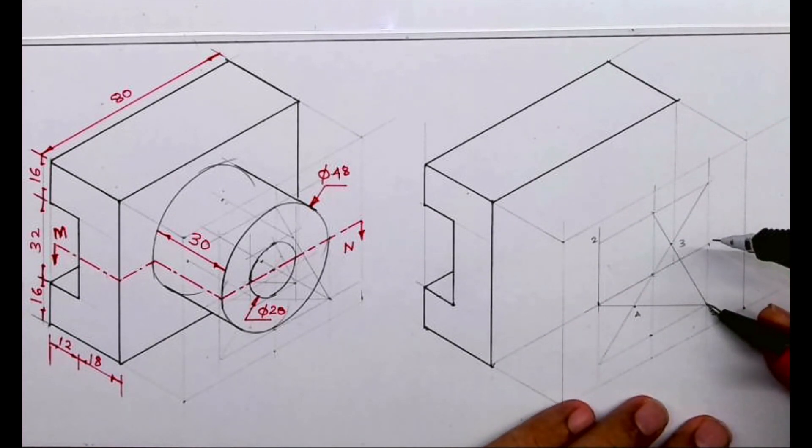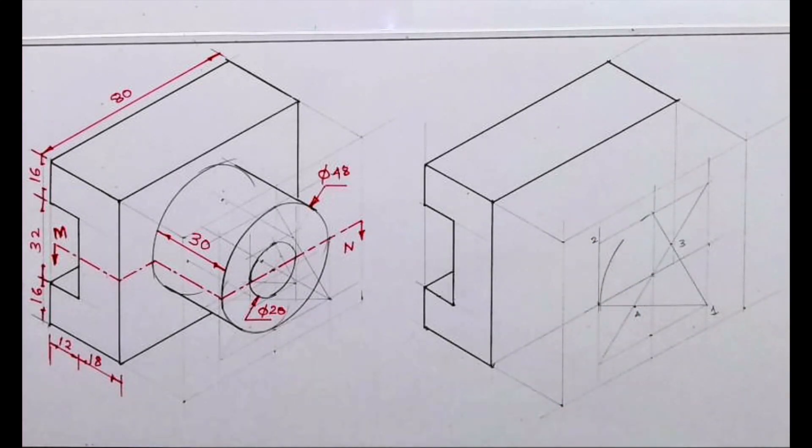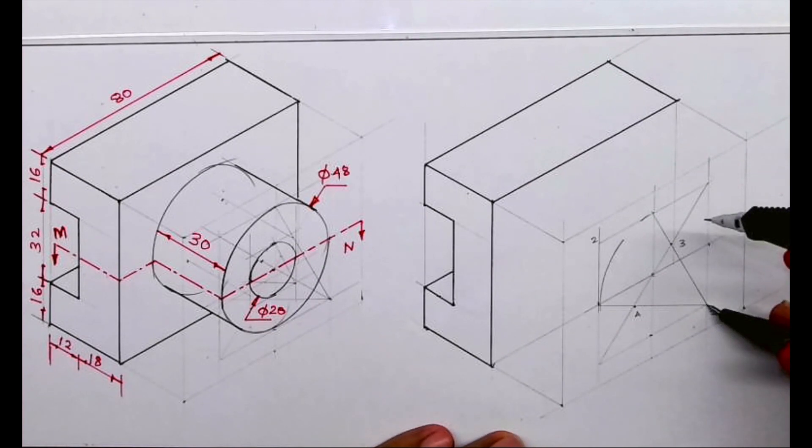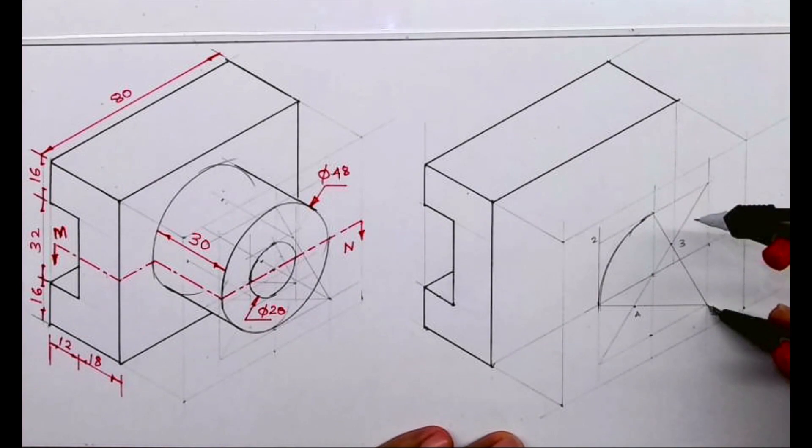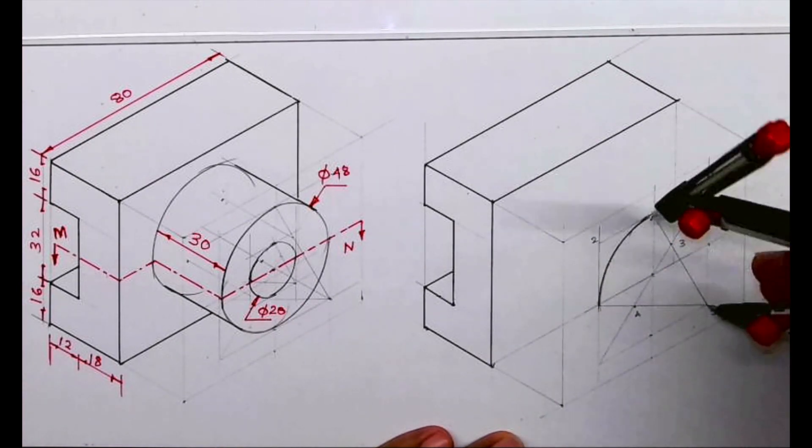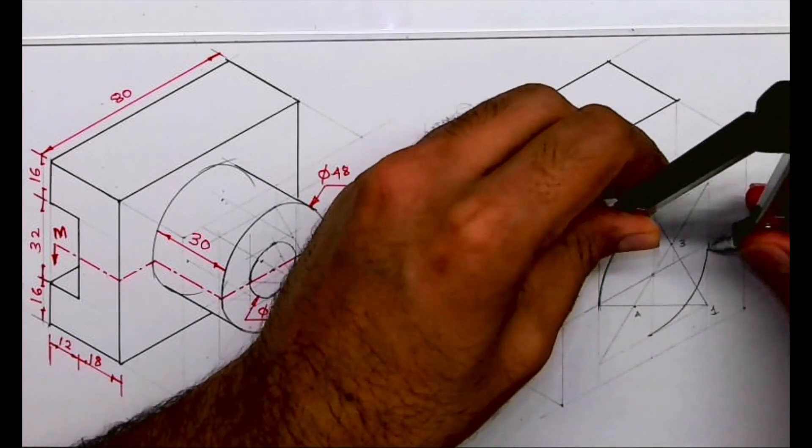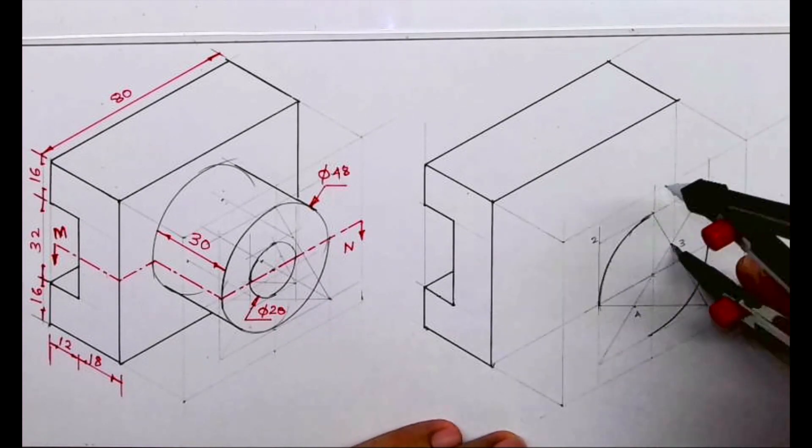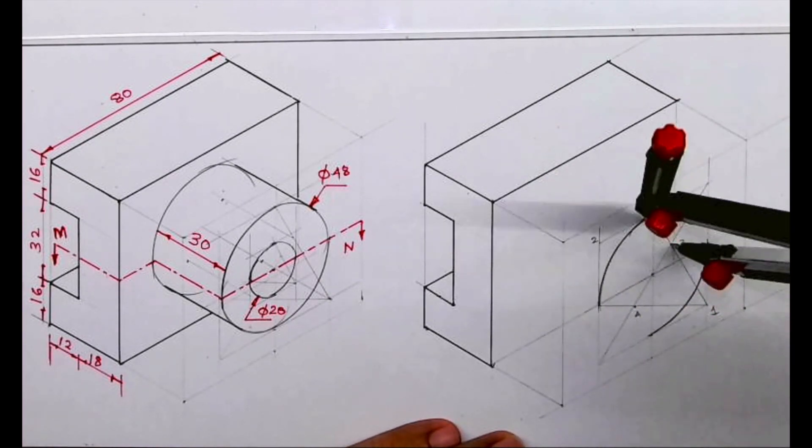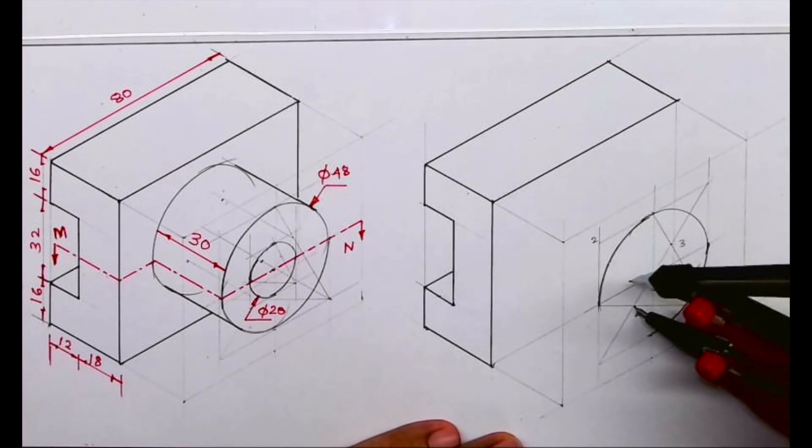So we have to take 1 to this M, midpoint of that opposite side, and draw an arc. Same from 2 we will draw an arc. We will keep the same radius. Then from 3 to M, and 4 to M.